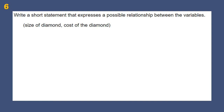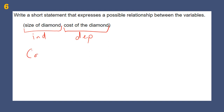Write a short statement expressing a possible relationship between the size of a diamond and the cost of a diamond. Which one comes first? What's causing the other? The size of the diamond is not something you change based on cost — the size is our independent variable. The cost of the diamond depends on how big it is. As the size goes up, the cost also goes up.